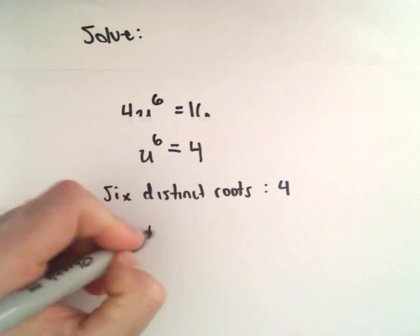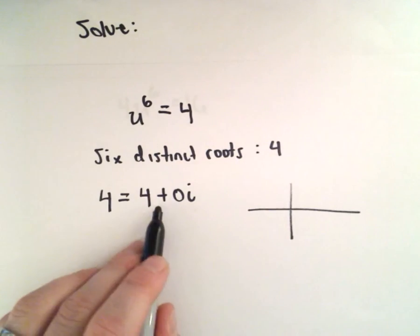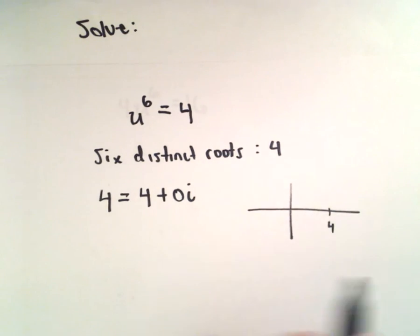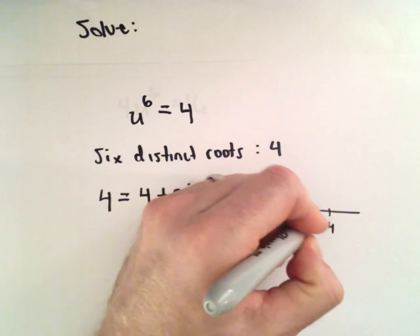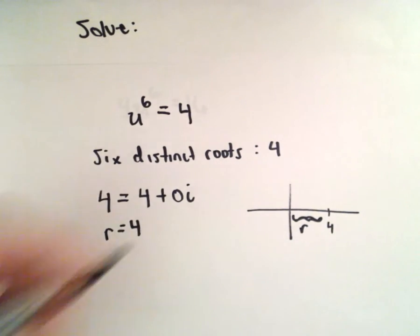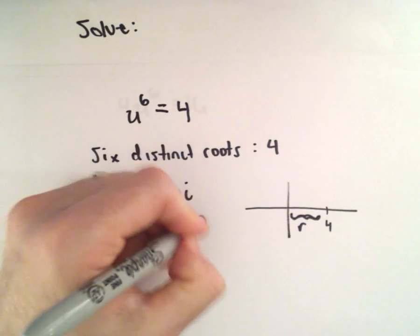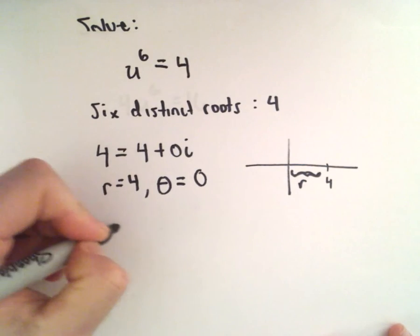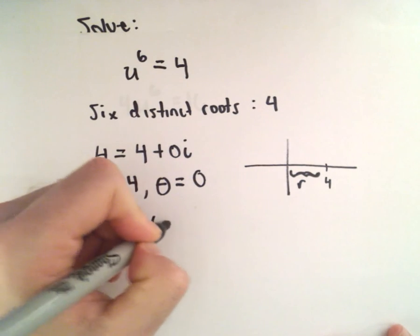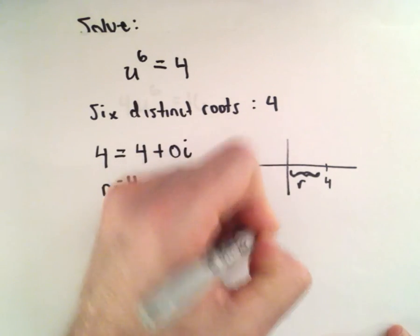First I'm going to write it in standard form: 4 plus 0i. If you think about plotting that complex number, it's just going to be sitting out on the real axis. So the r value, which is the distance to the origin, is clearly going to be 4. And the angle theta is also just going to be 0. So in trigonometric form, we can write the number 4 as 4 times cosine of 0 plus i times sine of 0.